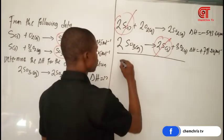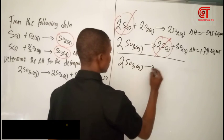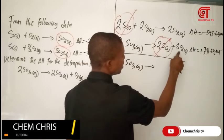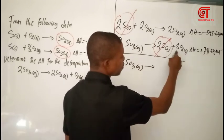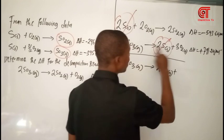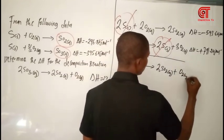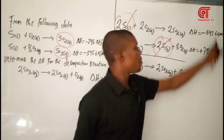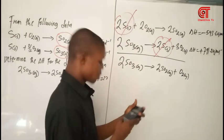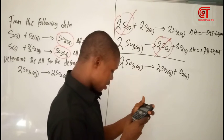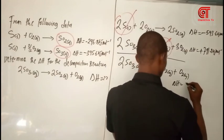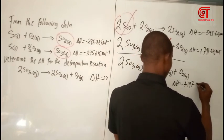So when you combine them, we now have 2SO3 gas on the reactant side, giving 2SO2 gas plus one O2 gas on the product side. Adding the delta H values together: the calculation gives +197.6 kilojoules per mole. So my total delta H of this reaction is +197.6 kilojoules per mole. Those are the three simple steps you can use for any Hess's Law calculation.